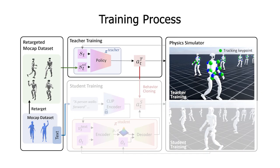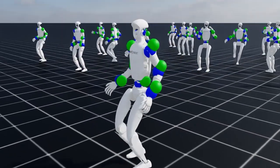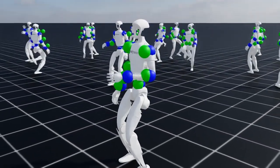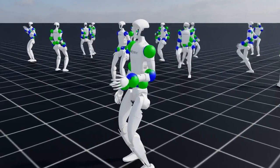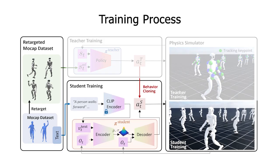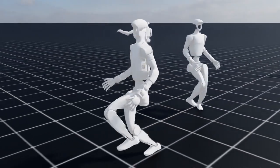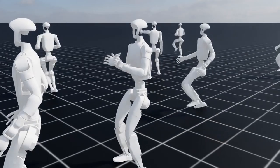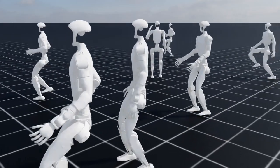First, we train a text-unaware tracking policy to convert human motions from the dataset into physically feasible trajectories that respect our robot's mechanical constraints and balance requirements. Then, we train a text-conditioned generative model, specifically a conditional variational autoencoder, to model the conditional distribution of these motion trajectories conditioned on the text commands.